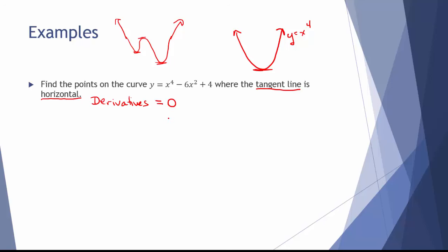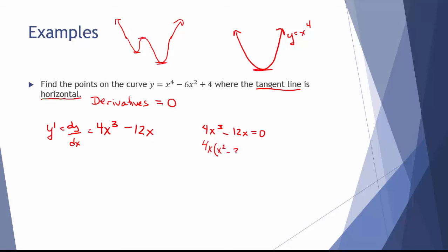First, take the derivative — I'll call it y prime or dy/dx. The derivative of x to the fourth is 4x cubed, minus 12x, and the derivative of 4 is 0. So y prime equals 4x cubed minus 12x. Setting this equal to zero: 4x cubed minus 12x equals 0. Factoring out 4x gives 4x times the quantity x squared minus 3 equals 0. By the zero product property, either 4x equals 0 giving x equals 0, or x squared minus 3 equals 0 giving x equals plus or minus the square root of 3.